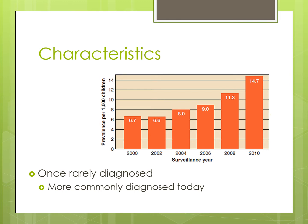While autism spectrum disorder used to be rarely diagnosed, it is much more commonly diagnosed today. Looking at prevalence per 1,000 children: in the year 2000 it was 6.7 children per 1,000, whereas in 2010 that estimate is about 14.7 children in every 1,000 diagnosed with autism spectrum disorder. Why we're seeing this rise is unclear — whether there is something environmental with some influence, or whether we've just understood it better and relaxed our criteria of diagnosis. It's really not clear why we're seeing this rise.